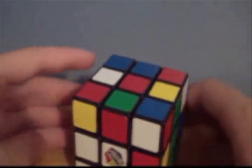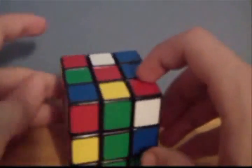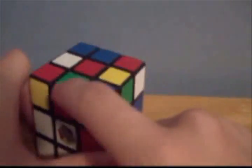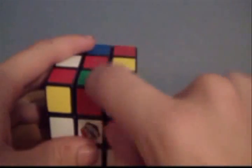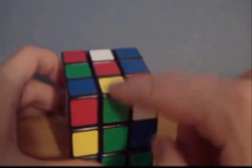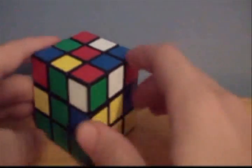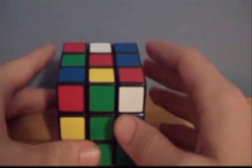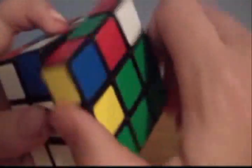Now we just flip it over. The bottom side is red, so we want to find a thing that does not have red on the piece. Once again, we're trying to do the cross. Here's one with the green and yellow. Green and yellow matches up right here. What we're going to do is up, right, up inverted, right inverted, up inverted, front inverted, up, front.